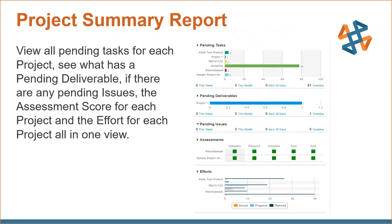At a high level, this is what a project summary report looks like when you log into project management. Any projects you have in the system will show up here. It shows pending tasks and deliverables for each project, any issues created, and assessment statuses — red, green, or yellow — across resources, schedule, cost, budget, and risk. It also shows upcoming items in the next 30 days, overdue items, and more. You can configure what you want to see.